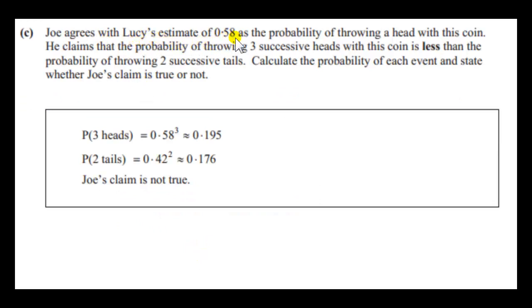Joe agrees with Lucy's estimate of 0.58 as the probability of throwing a head with this coin. He claims that the probability of throwing three successive heads with this coin is less than the probability of throwing two successive tails. Okay so we're going to see whether or not Joe's claim is true. So the probability of three heads is 0.58 to the power of three. We're dealing with independent events. So the probability of getting three heads on this coin is the probability of getting heads times itself three times.